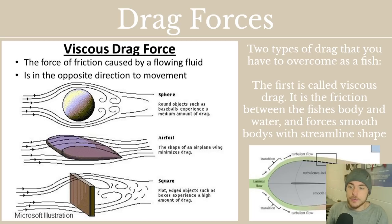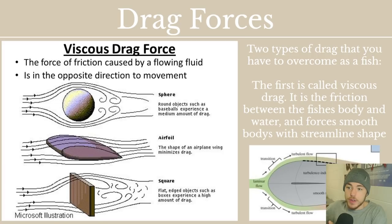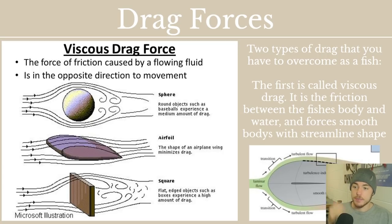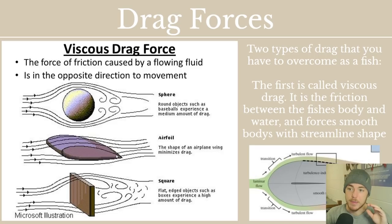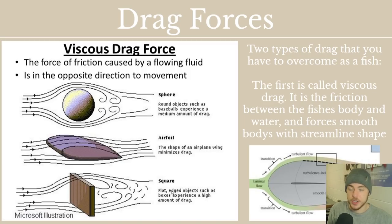The first type is called viscous drag — it is essentially friction between the fish's body and the water, and it forces smooth bodies with a streamlined shape. If you try to roll a ball on the ground, the ball will eventually stop moving because it has some friction with the ground. On ice it'll move a little bit longer; on grass it won't roll as far because grass has a higher friction value. In the water, the friction between the fish's body and the water creates a force against the direction the fish is moving. Spherical shapes are about midway, and airfoil shapes — like airplane wings — are among the most efficient. Fish are essentially that shape, tilted upward. If you were a square block moving through the water, you would generate a lot of viscous drag because of your large surface area.